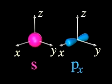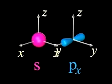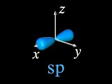When we mix an s and a px orbital, we produce two hybrid orbitals called sp, pointed in opposite directions along the x-axis.